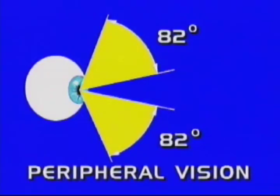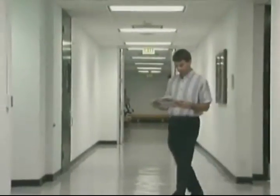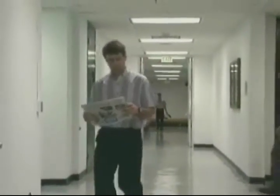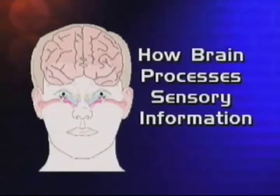Peripheral vision is approximately 82 degrees on either side of the central vision field. Peripheral vision, also known as ambient vision, is involved with perception of motion and attitude cues and provides peripheral reference cues to maintain spatial orientation. This visual capability enables orientation independent from central vision, which is why we can walk straight while reading. An understanding of how the brain processes sensory information is important so you can recognize and correct spatial disorientation if it occurs.